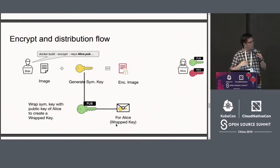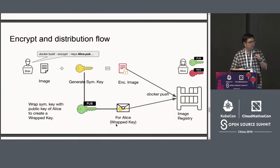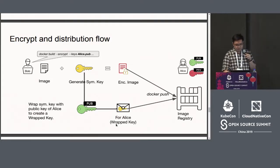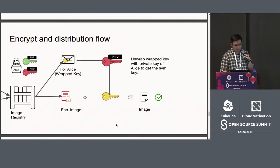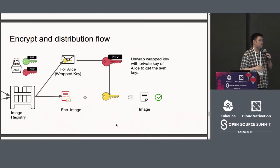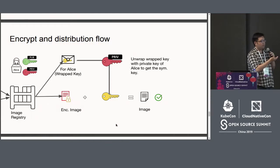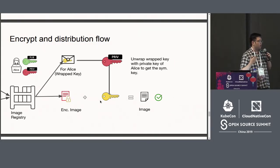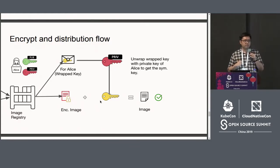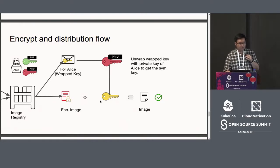The wrap key can only be decrypted by Alice. Bob exposes the image by uploading two things to the registry: the encrypted image and the wrap key. On Alice's side, to decrypt the image she takes the wrap key, decrypts it with her own private key — which only she has access to — and from there she gets the symmetric key and the parameters needed to perform the decryption and successfully decrypt the image.